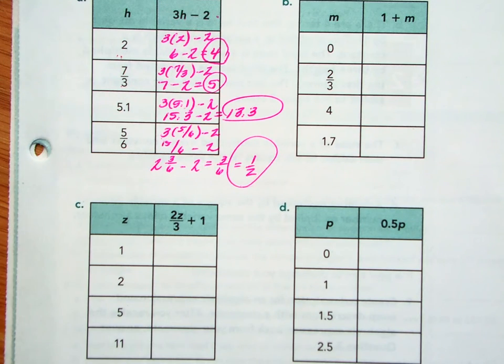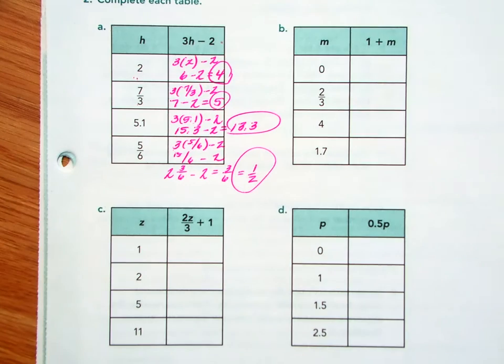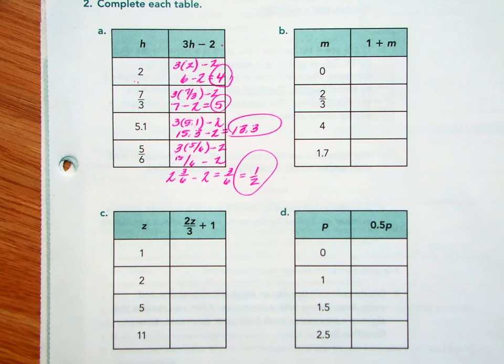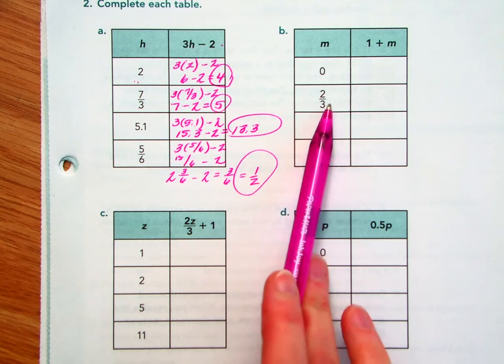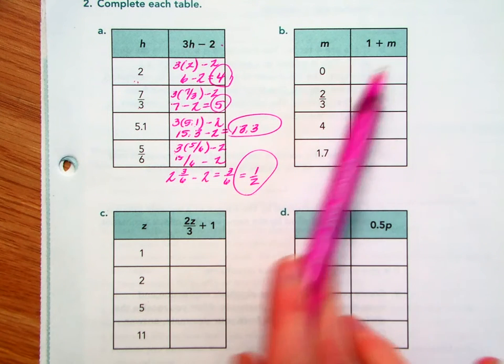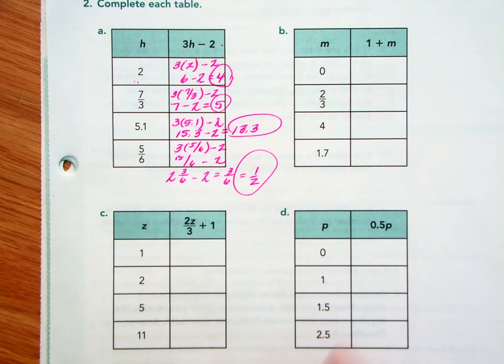All right, pause the video. Try these other ones out. Now, C looks more reasonable because it's got less fractions going on. If you really get hung up on the fractions of the decimals, pull out your calculator. I want you to practice the substitution more than I need you to practice fractions and decimals at this moment. Pause the video. Give B, C, and D a try.